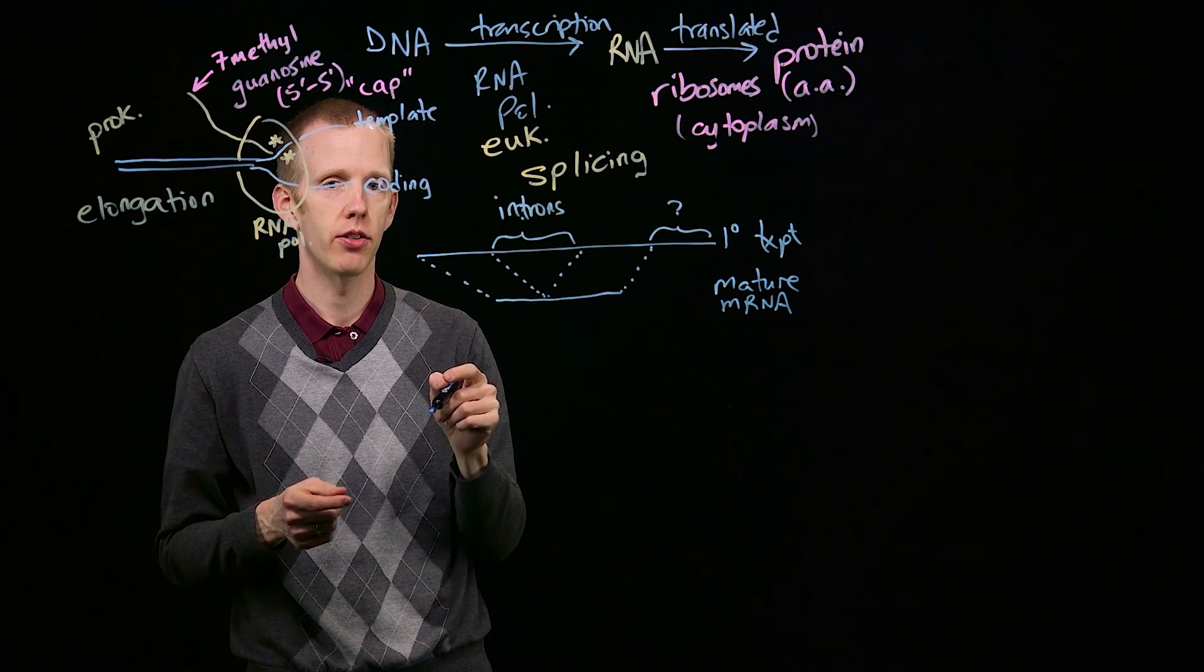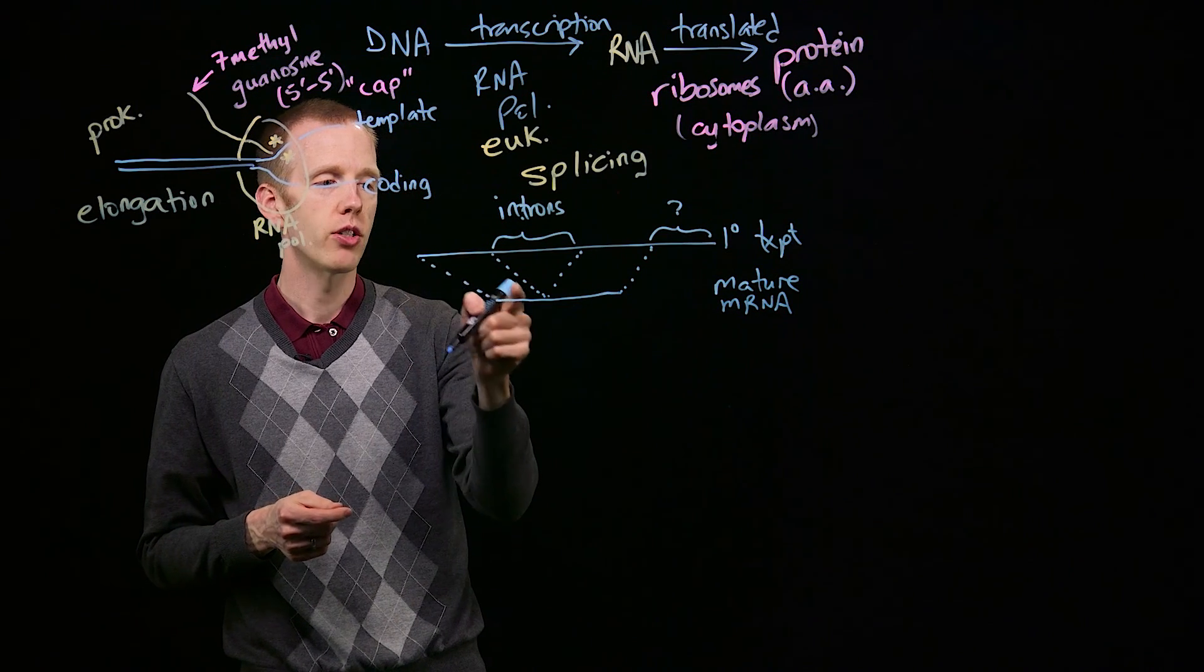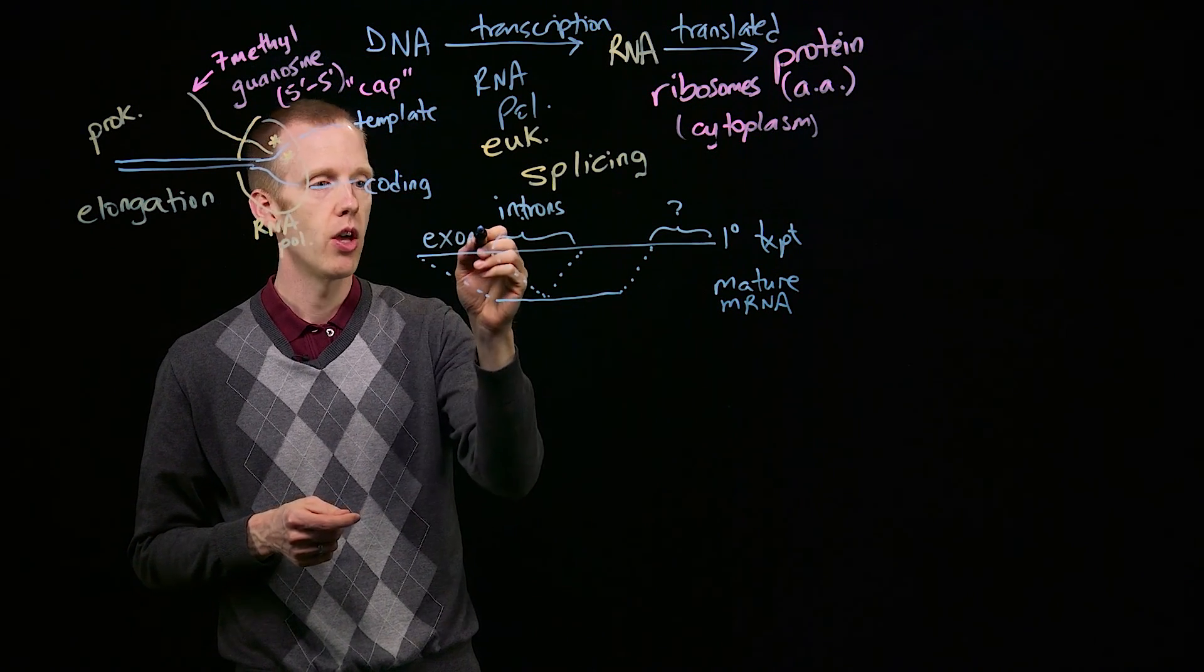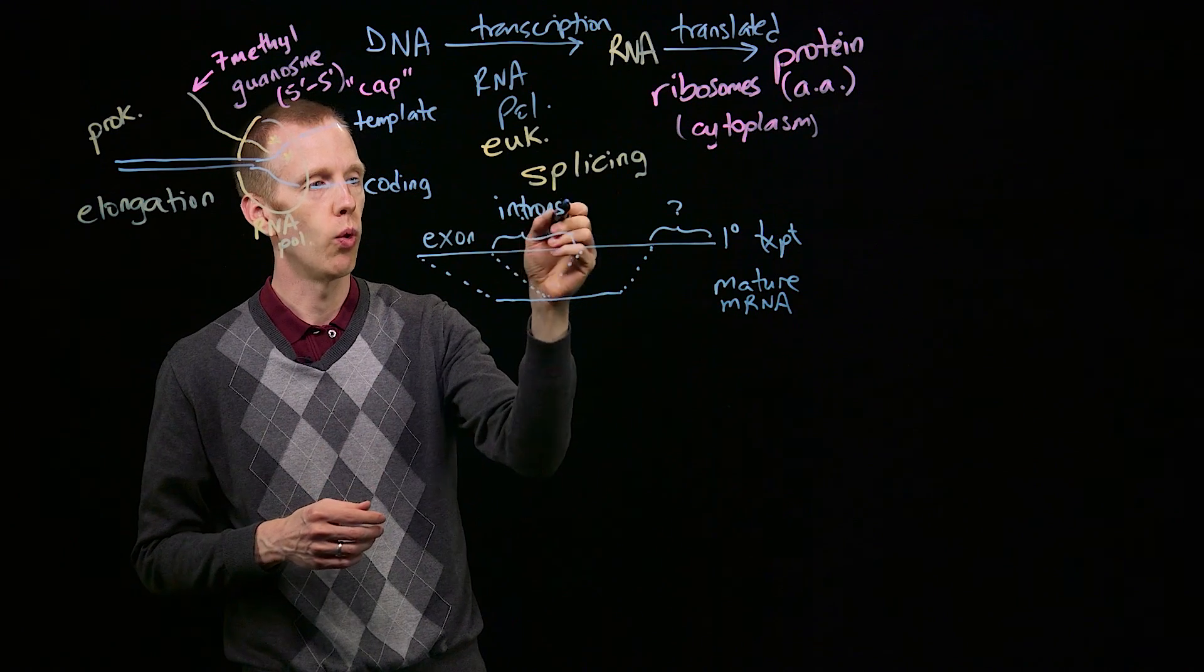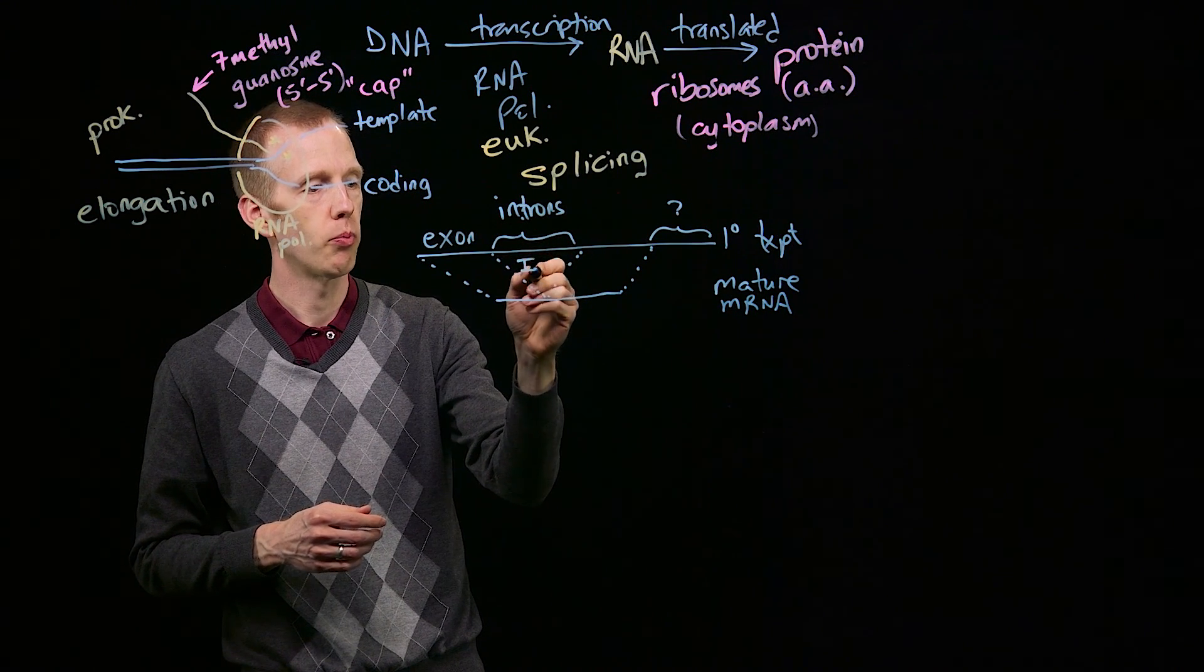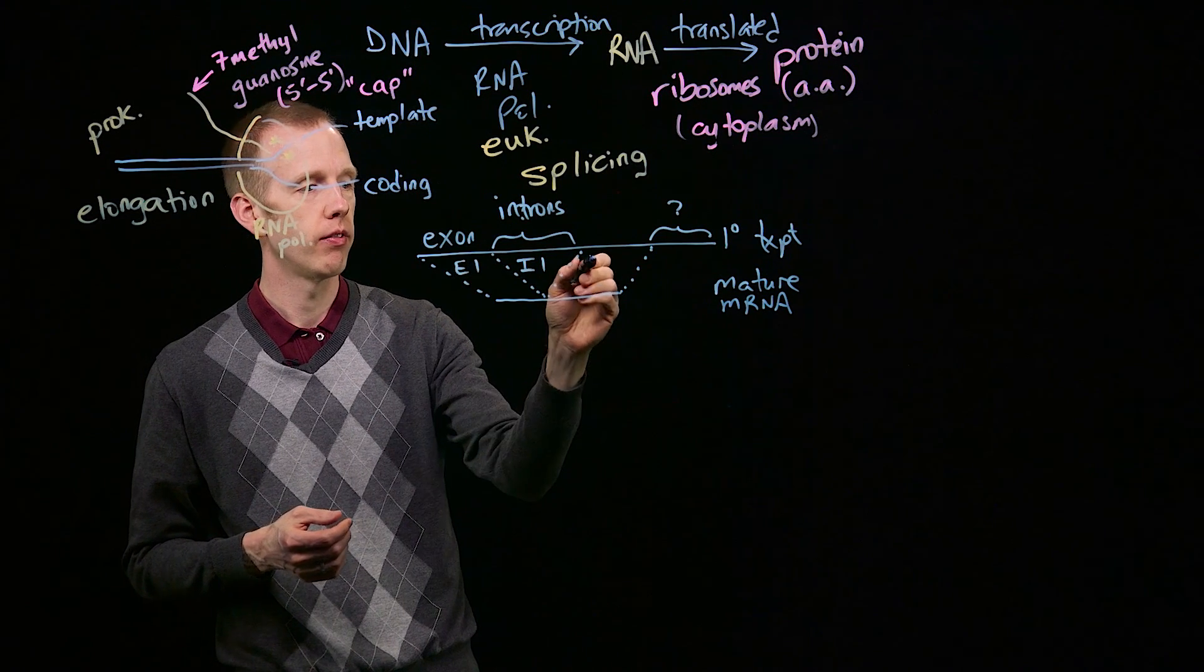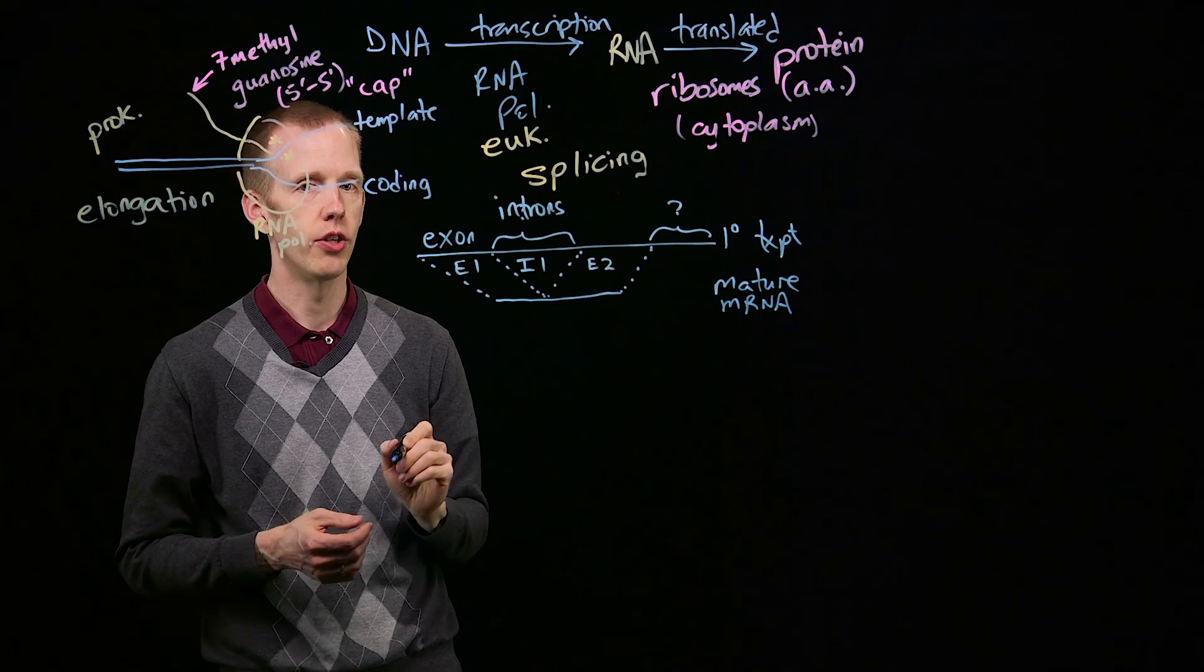And geneticists termed these parts of the messenger RNA molecule that are taken out before the messenger RNA molecule leaves the nucleus and gets translated introns, and the parts that are left in called exons. So in this case, I've diagrammed a gene that has one intron, which we'll call I1, and two exons, exon1 and exon2.